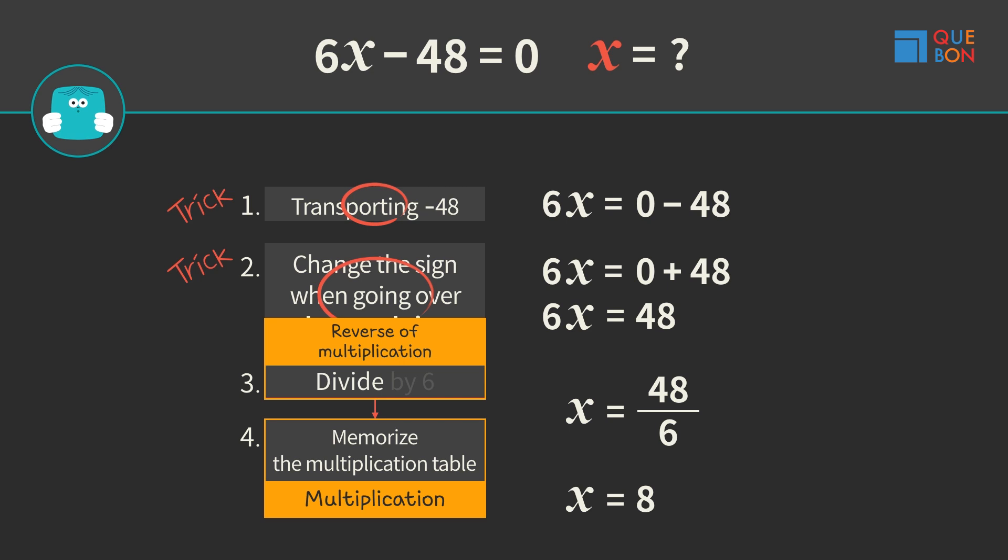But, Sweaty divides then multiplies. What is Sweaty doing here? This is unnecessary extra work. Now, let's learn it the quebon way.